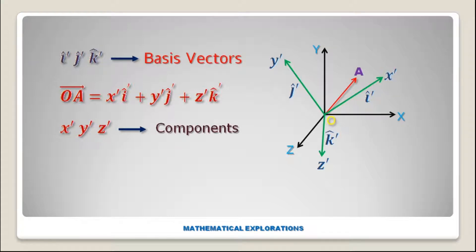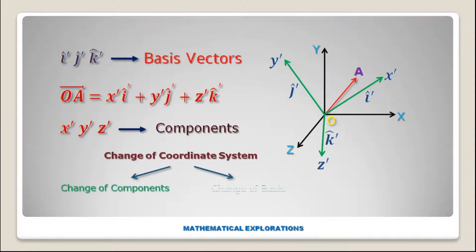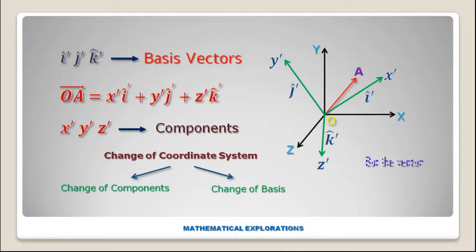When we change our coordinate system, the components and basis vectors also change. In the XYZ coordinate system the vector OA equals X·i-cap plus Y·j-cap plus Z·k-cap, but in the X-prime, Y-prime, Z-prime coordinate system the vector OA equals X-prime·i-cap-prime plus Y-prime·j-cap-prime plus Z-prime·k-cap-prime. The components and basis vectors change, but the vector and its direction remain the same.